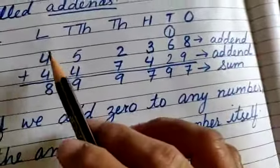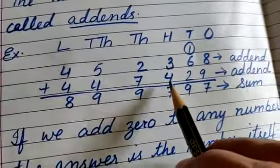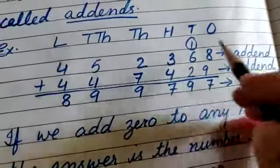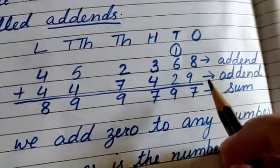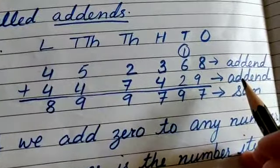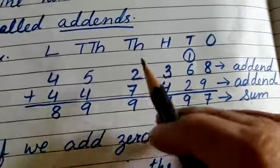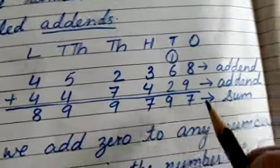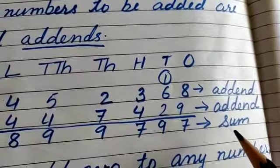Example: here are two numbers. We will add these two numbers. This number and this number are called addends. Yeh numbero aur yeh wale numbero ko hum log kya bolte hai? Addends. And the answer — when we add both these numbers, that answer is called sum. These numbers are called addends and the answer is called sum.